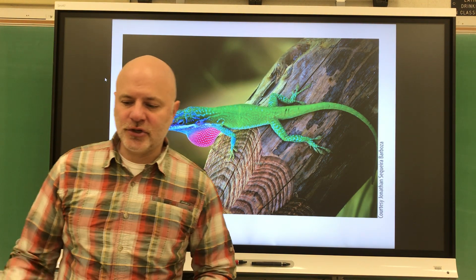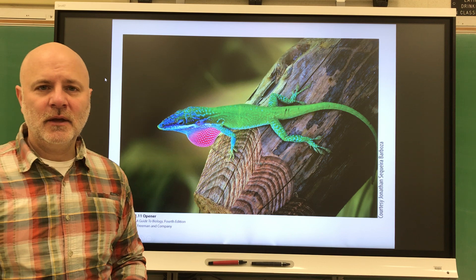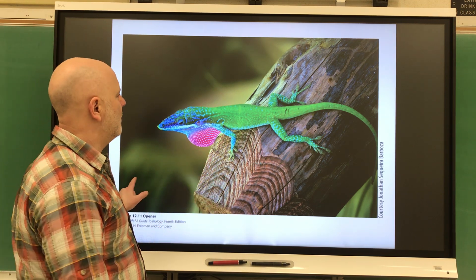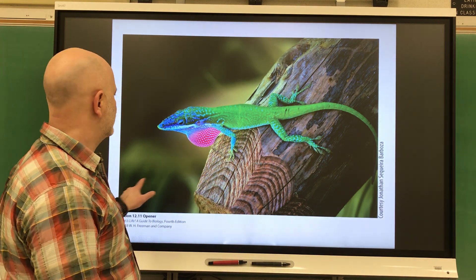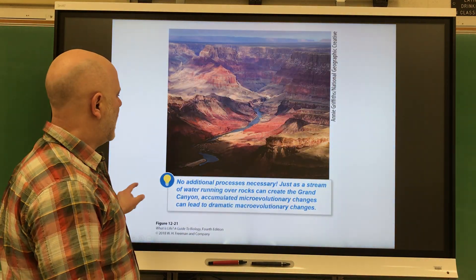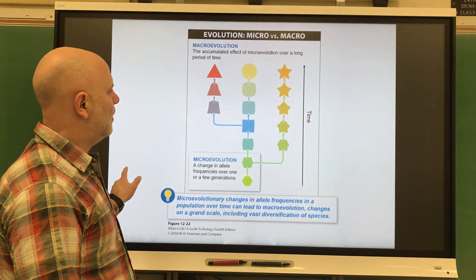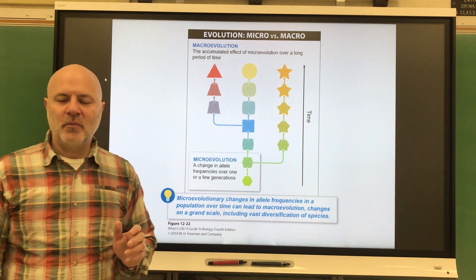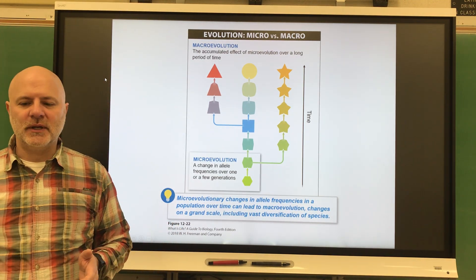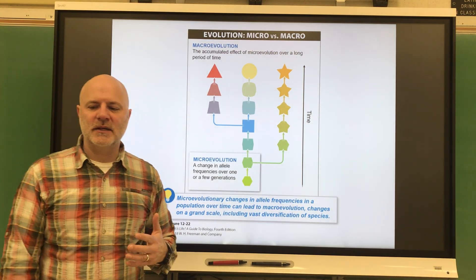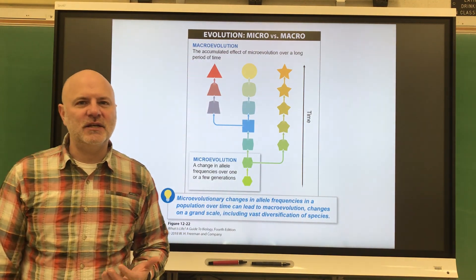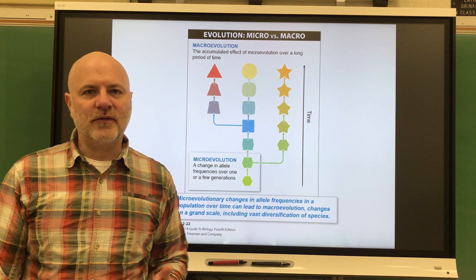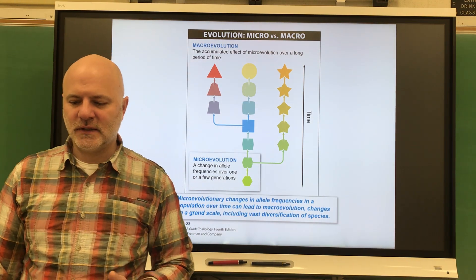Let's look at evolution over time. We're going to look at macro evolution and micro evolution. Micro evolution is a slight change in the allele frequencies in a population over a few generations.